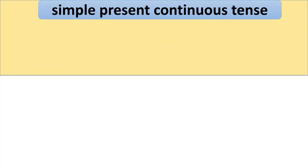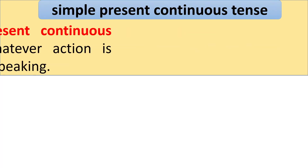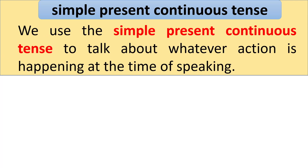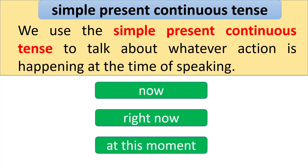Simple Present Continuous Tense. We use the simple present continuous tense to talk about whatever action is happening at the time of speaking. When you find these time words in a sentence — for example, now, right now, and at this moment — we need to use the simple present continuous tense.